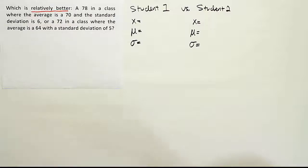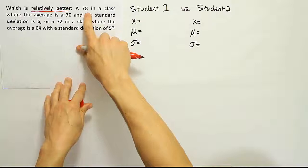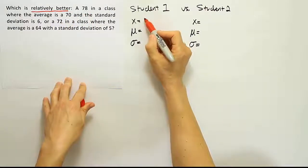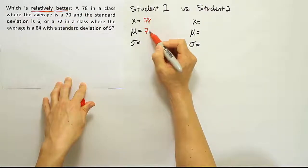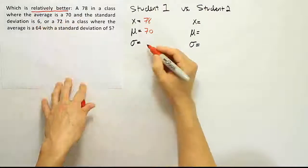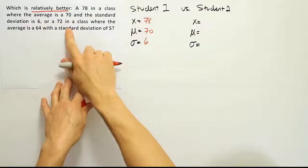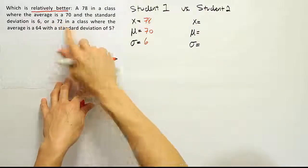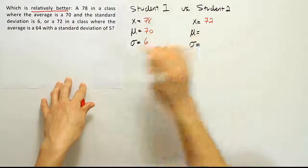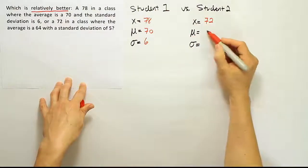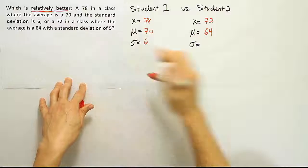Okay, so let's start with student 1. His score was a 78 in a class where the average was 70. So 78 where the average was 70 and the standard deviation was 6. The other guy, student 2, had a 72 in his class where the average was 64 and the standard deviation was 5.